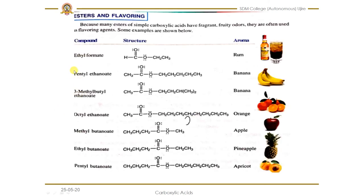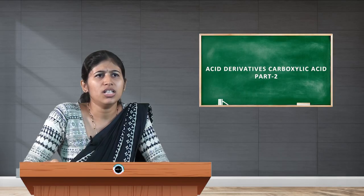We focus heavily on esters because they have the highest applications. For example, in juices, flavors are added instead of real fruit — these flavors are obtained from esters. As shown in the slides, ethyl formate is used as a rum flavor, and methyl butanoate gives an apple flavor. These are just a few examples of the wide variety of ester-based flavoring agents.